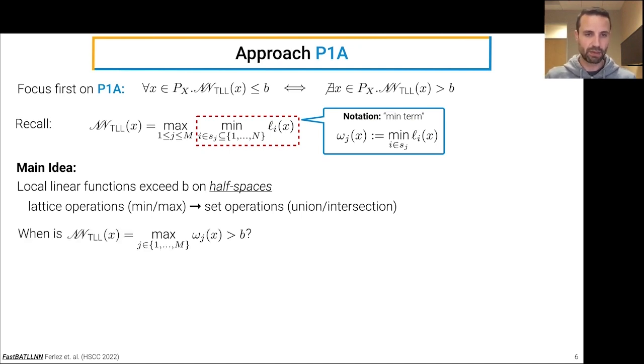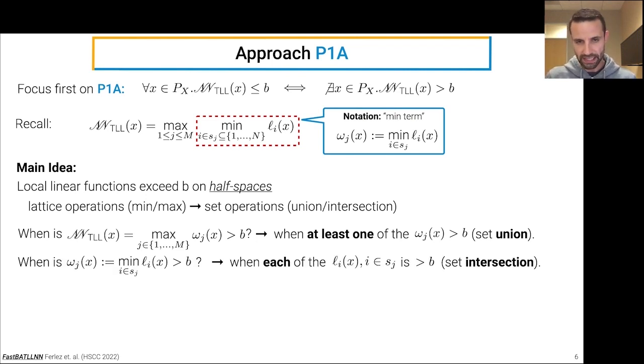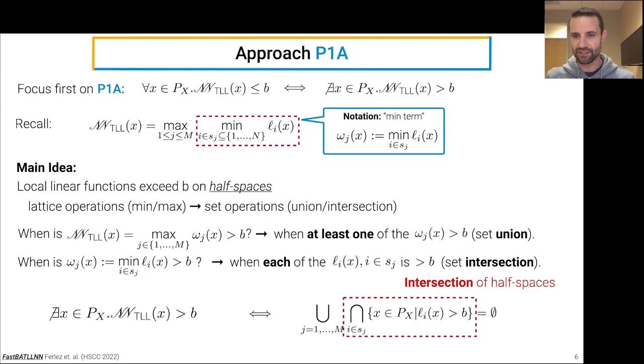So in particular, when is the output of the neural network greater than B? It's greater than B when at least one of its min terms is greater than B. So this is going to turn into a set union. And when is a min term greater than B? A min term is greater than B precisely when each one of the local linear functions it consists of is greater than B. And so this looks like a set intersection. So in particular, we can show that problem 1A is equivalent to not having any violations in the sense that none of these intersections of half-spaces has any points in it. In other words, this union of intersections is empty. Conversely, there's a violation if one of these intersection terms is non-empty.